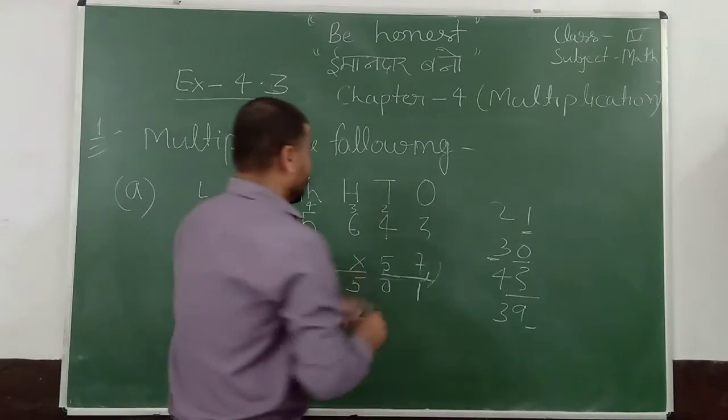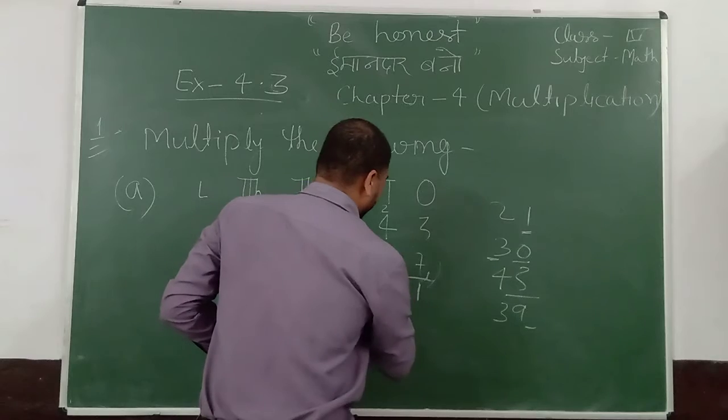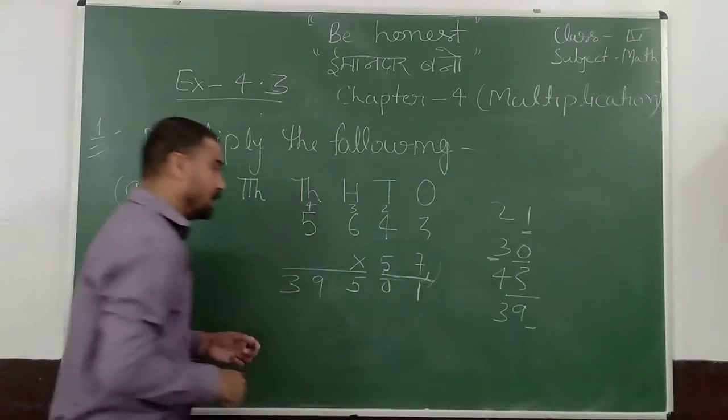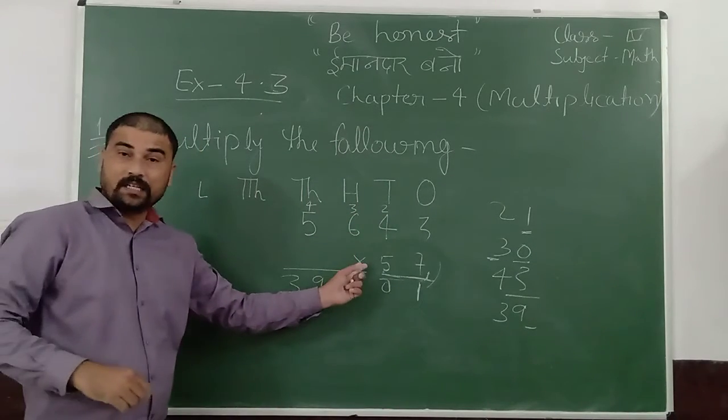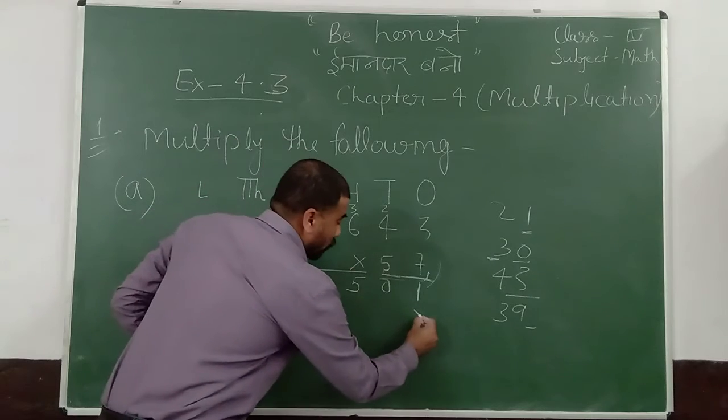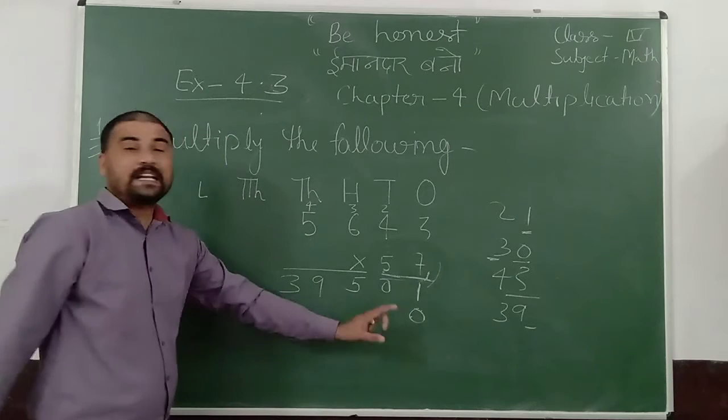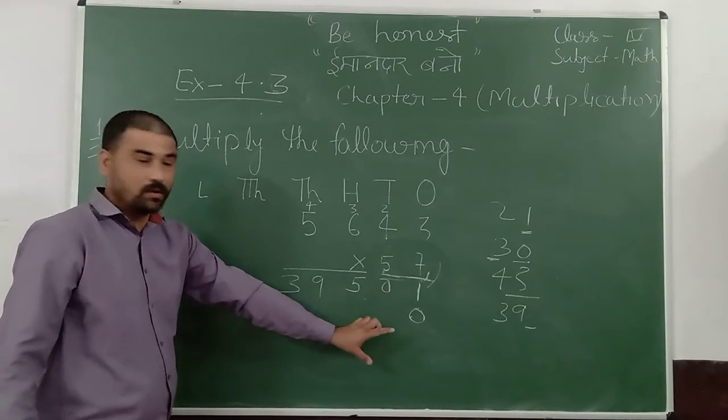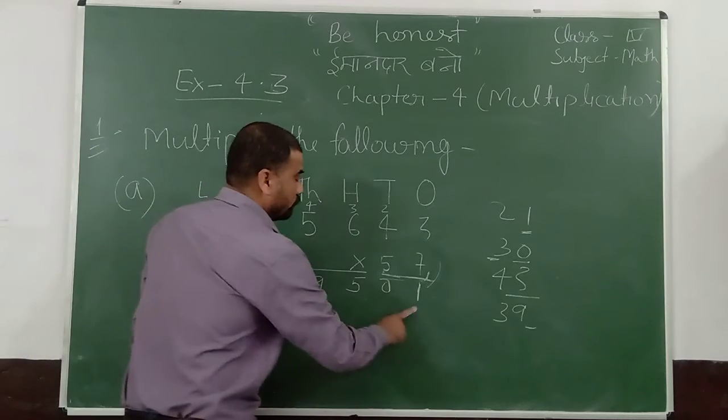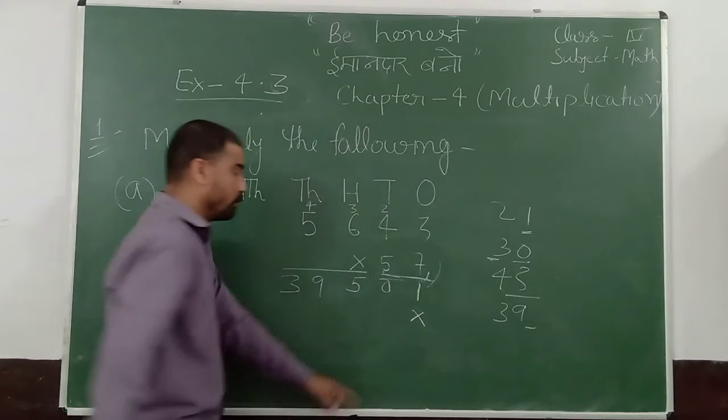After that, multiply by 10 digit number, 5. When you multiply 10 digit, you have to put cross or 0. You can put anyone here. I put cross here.